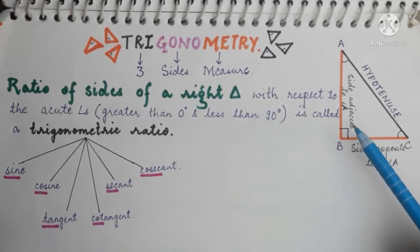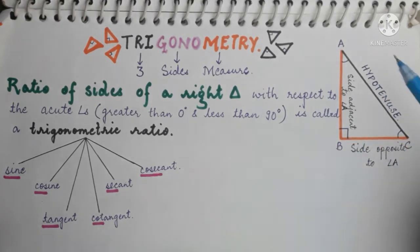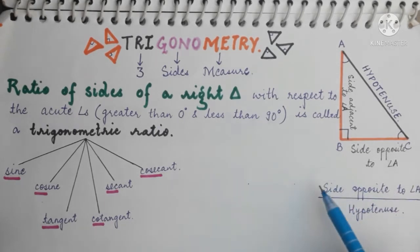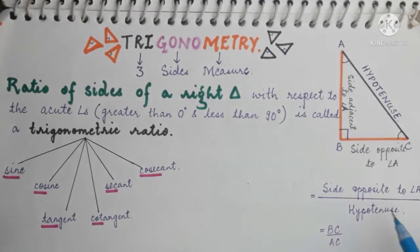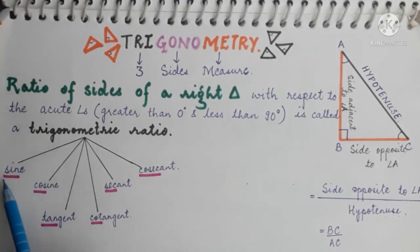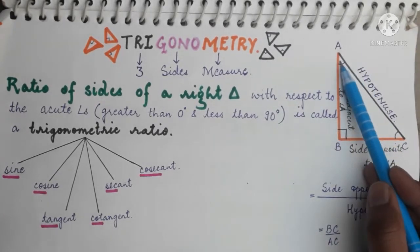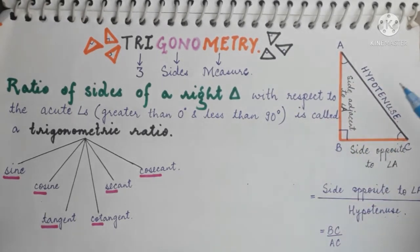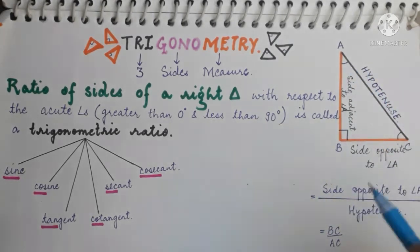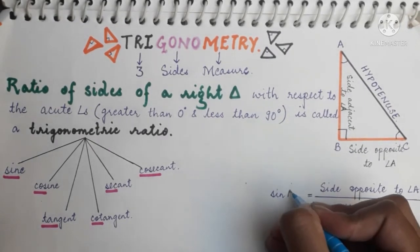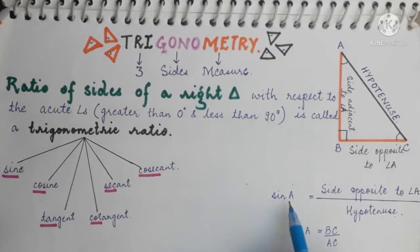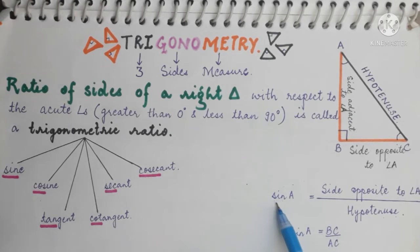Listen very carefully. Let us take the ratio of the side opposite to angle A and the hypotenuse — that is, side opposite to angle A upon hypotenuse, which is BC upon AC. This ratio is called the sine of angle A. So we write: sine of angle A, or sin A, is equal to BC by AC. These are the full names, and sin A is the short form used in calculations.